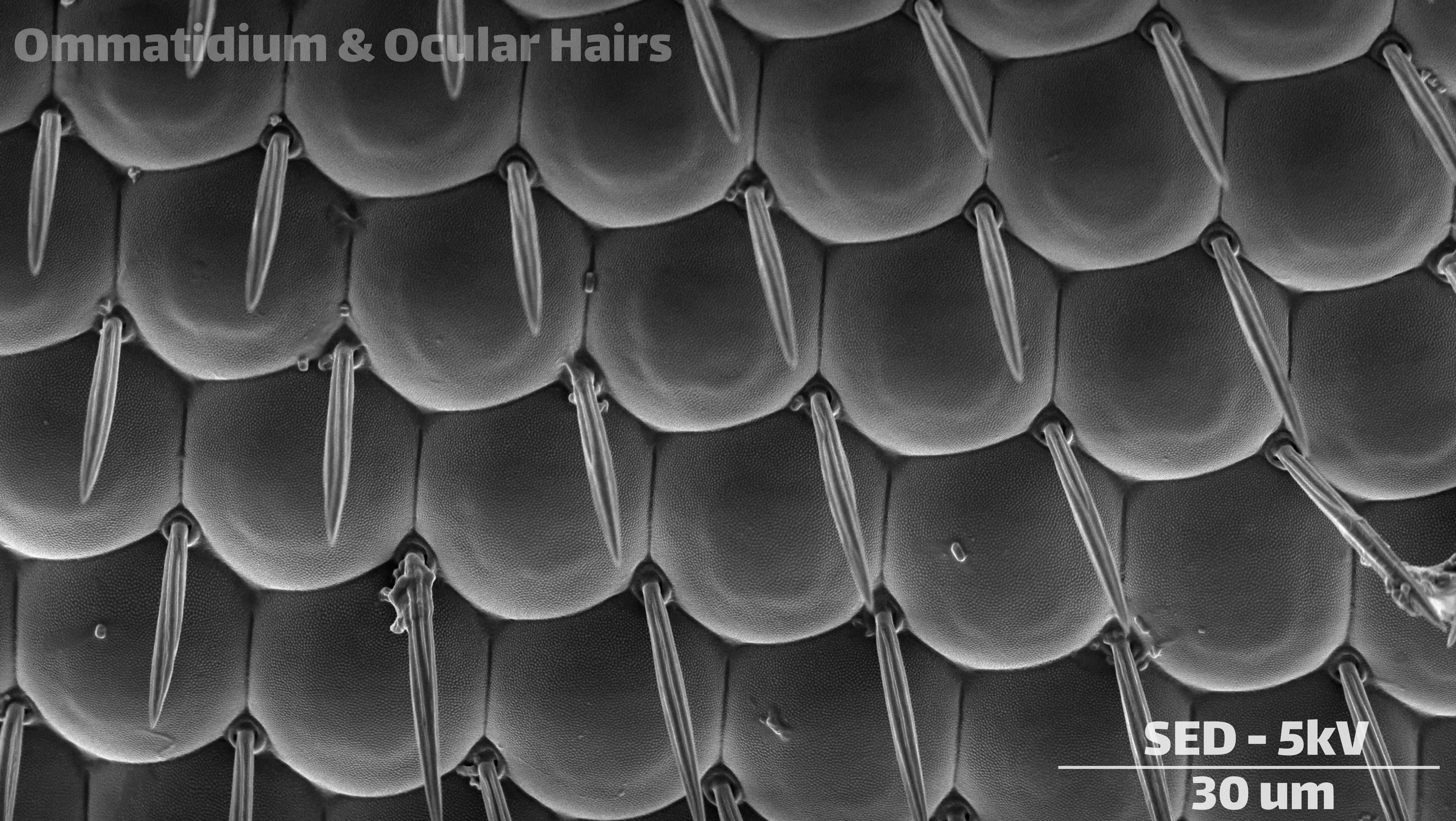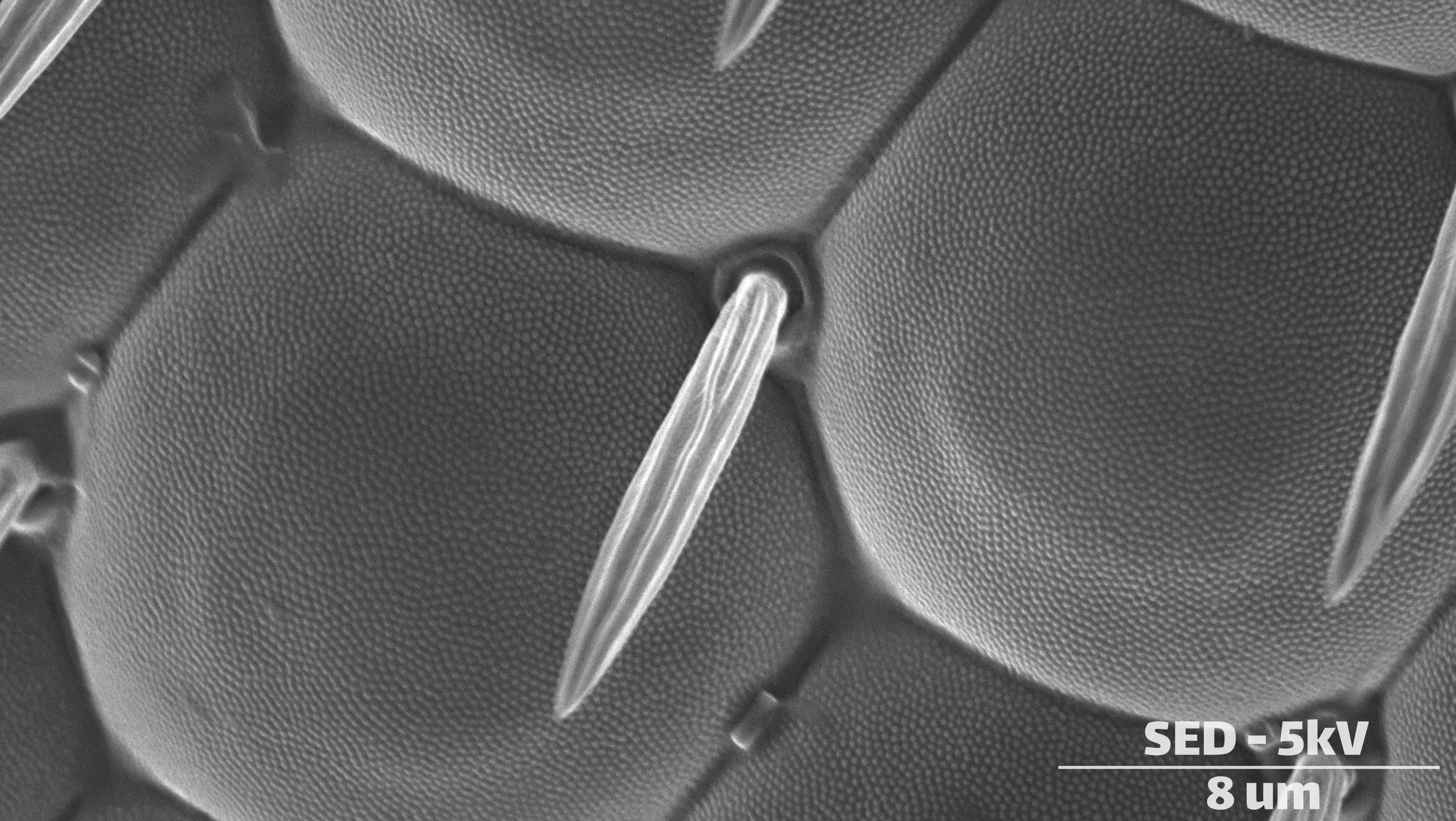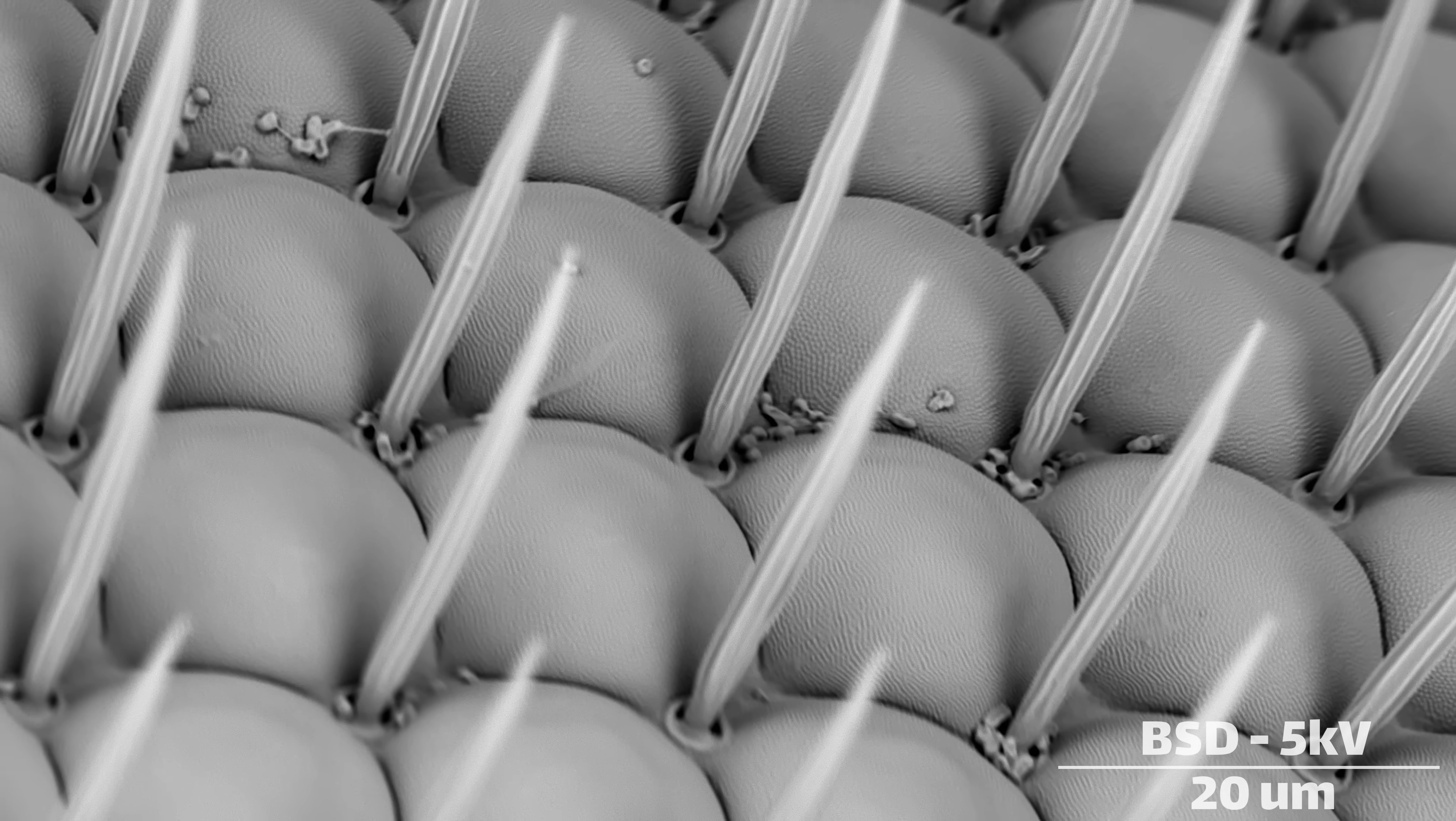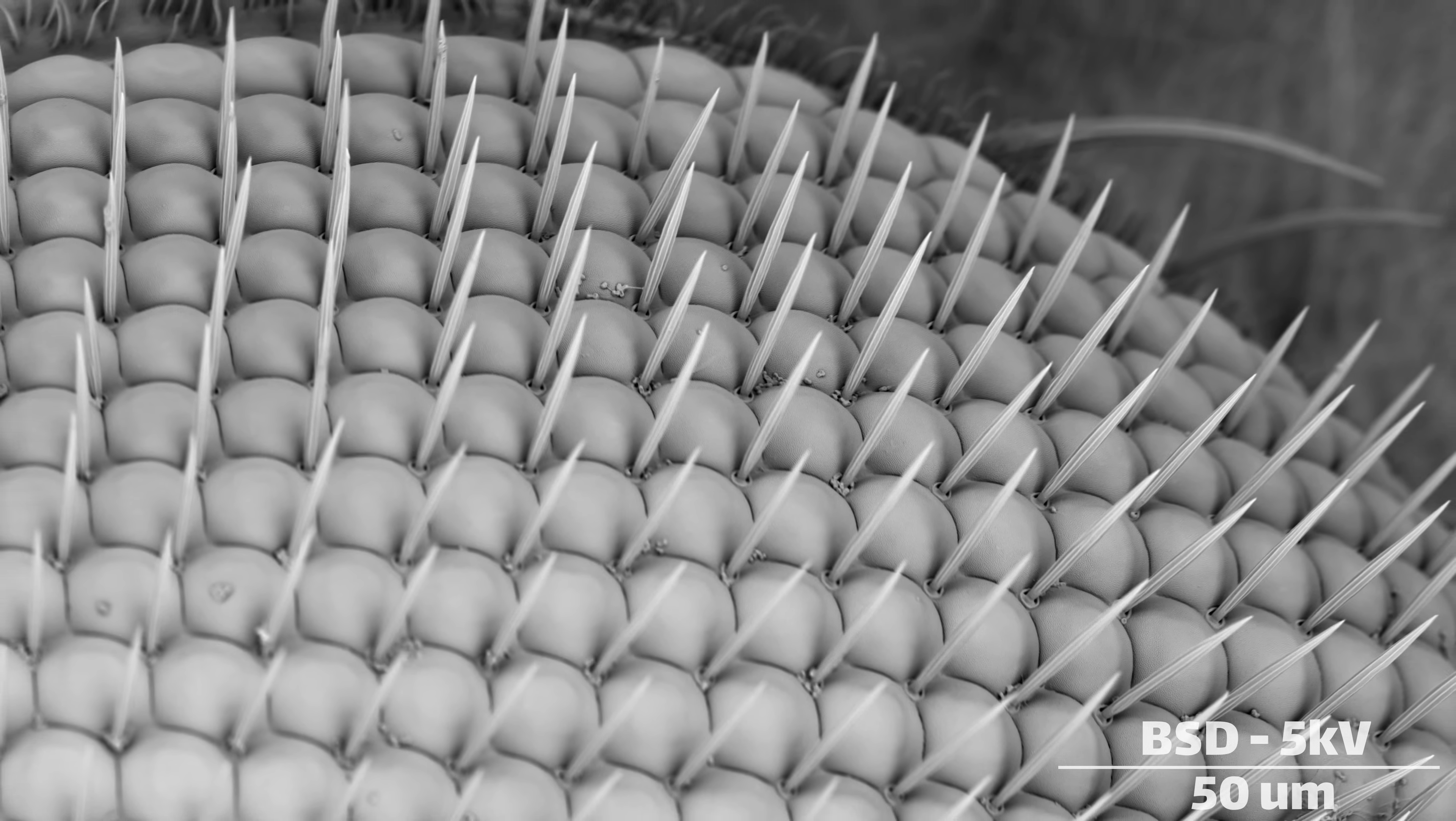In between each segment is an ocular hair. It's believed that these operate similar to mammalian eyelashes. They deflect air currents and create a pocket of stagnant air just above the surface of the eye, which helps prevent dust and particles from getting stuck. When half your body is literally an eyeball, it's important to keep them clean.